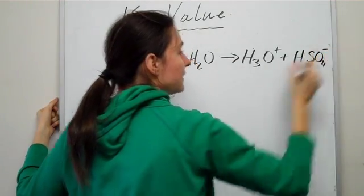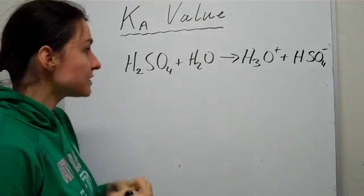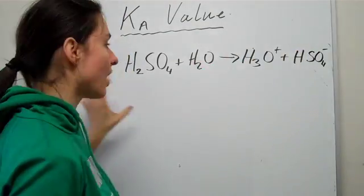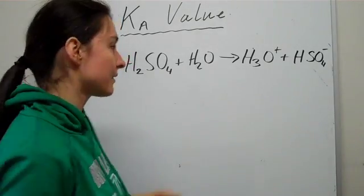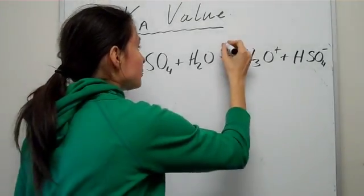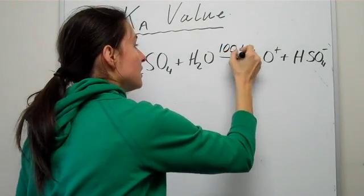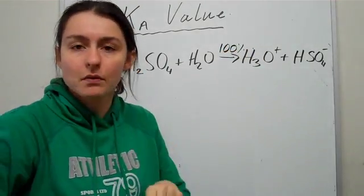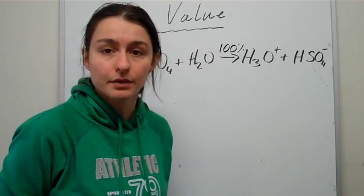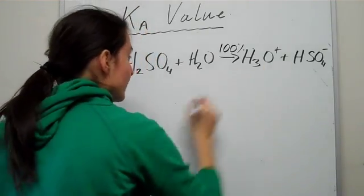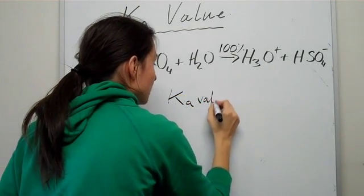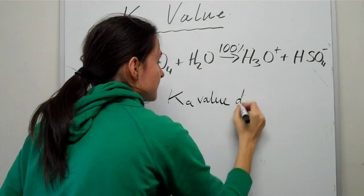Because this is a complete reaction, this will actually ionize one more time, but we don't care about it now. Because it's so powerful, it's 100% forward. What we know about systems that are 100% forward, they're known as complete reactions. You can't say that they will be at equilibrium ever. So this reaction here, the Ka value does not exist.